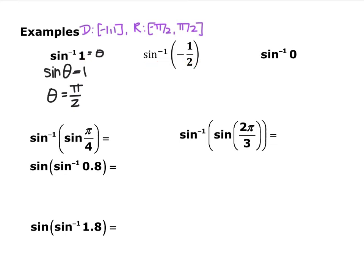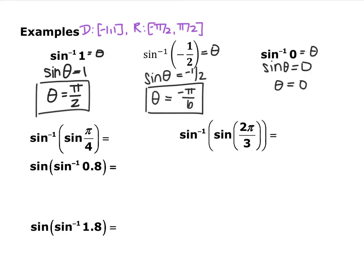Try sine inverse of negative 1/2 and sine inverse of 0. Remember, when you are in the fourth quadrant, you use negative angles. Sine inverse of negative 1/2: sine of what angle equals negative 1/2? There's an infinite number of answers, but because of the restricted range, the only possible answer is negative π/6. Many of you may have answered 11π/6, which is the fourth-quadrant angle, but because of our restricted range, we answer negative π/6 — same location, different angle.